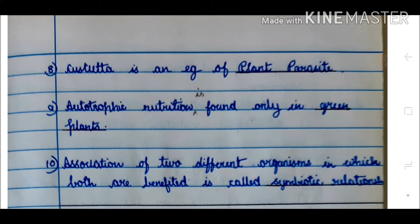8. Cuscuta is an example of a plant parasite. 9. Autotrophic nutrition is found only in green plants. 10. The association of two different organisms in which both are benefited is called symbiotic relationship.